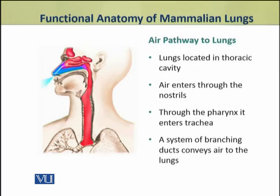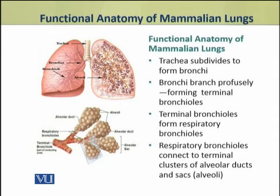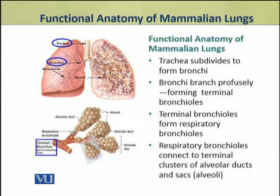A system of branching ducts conveys air to the inner part of the lungs. In this branching network, trachea subdivides and it forms bronchi. These bronchi branch profusely — there is extensive branching — and they form, after this branching, the terminal bronchioles. Terminal bronchioles further divide and they form respiratory bronchioles.